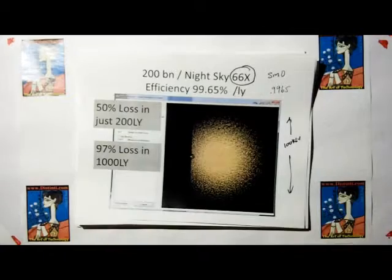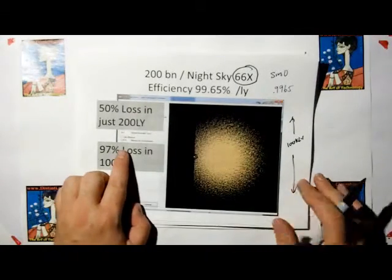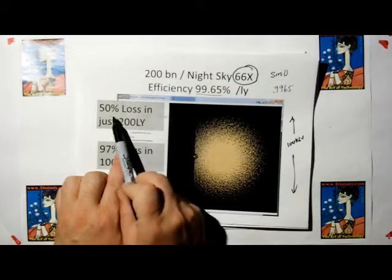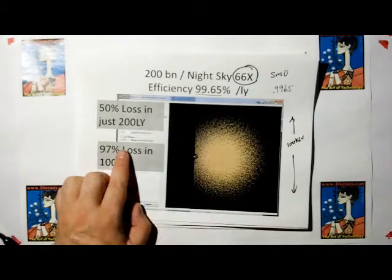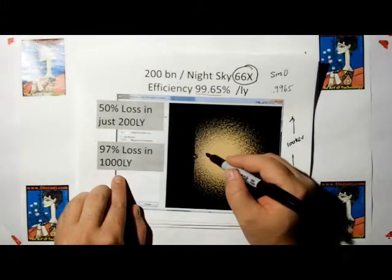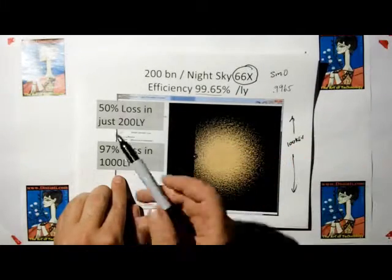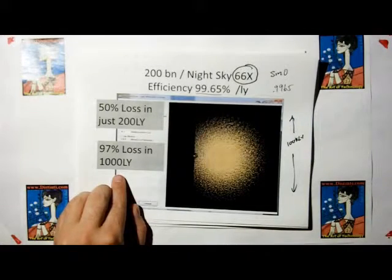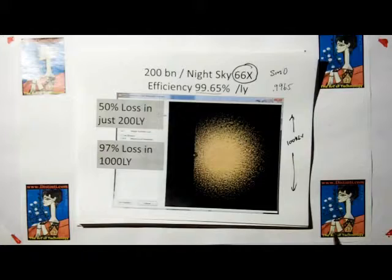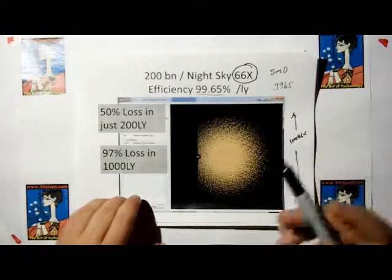After every light year, 99.65 percent of the luminous energy must remain. That would account for and bring all the luminous energy from the Milky Way galaxy down to the actual level that we measure. This led to a problem, because if you back this out, that means light would lose 50 percent in just 200 light years. And after only 1,000 light years, 1 percent of the way across the Milky Way galaxy, you lose 97 percent of your light.